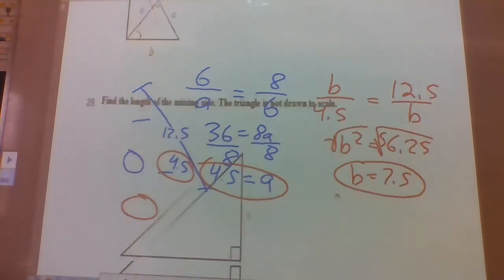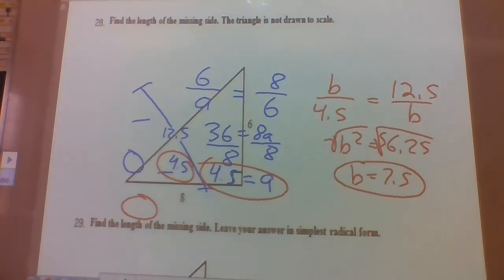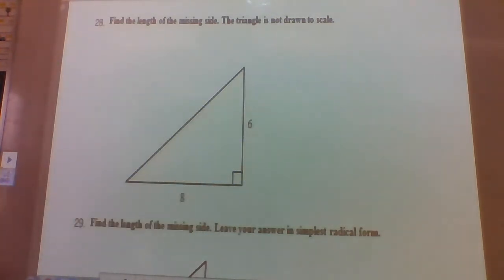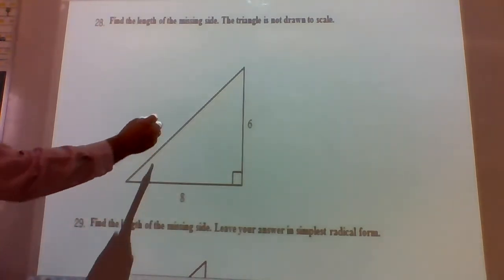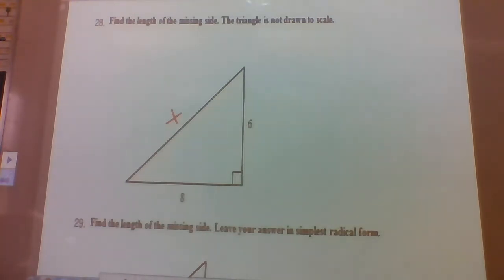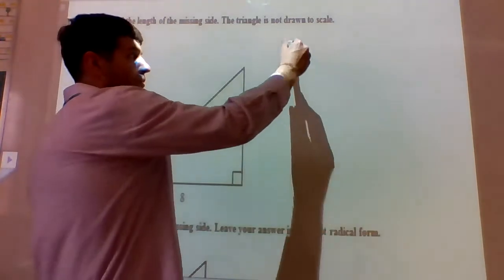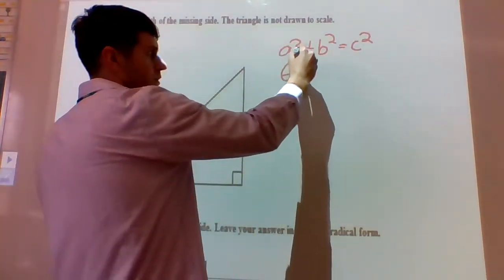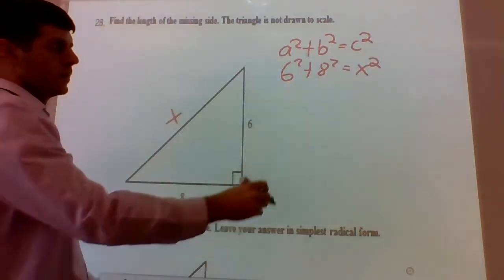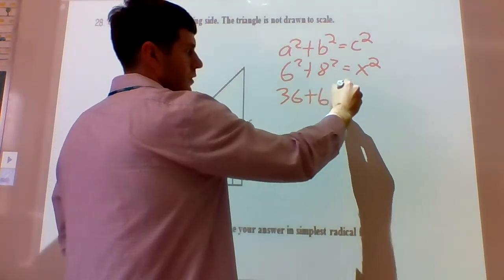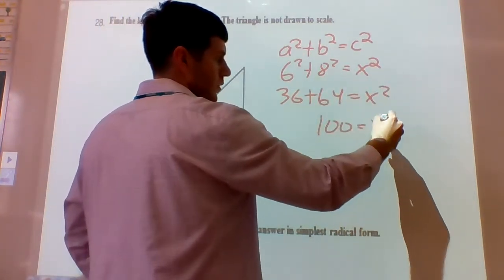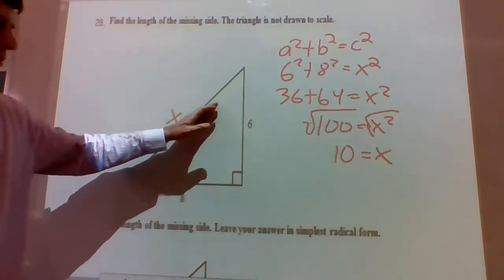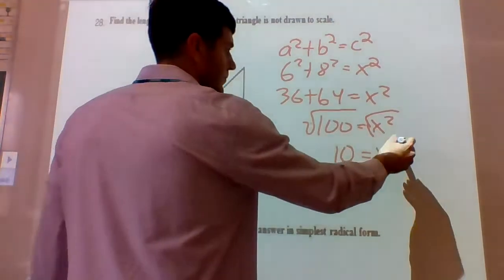Problem 28: find the lengths of the missing sides. We have a right triangle with two sides given and we need to find the third side using the Pythagorean theorem: a² + b² = c², or leg² + leg² = hypotenuse². The legs are 6 and 8, and the hypotenuse is X. So 6² + 8² = X², which gives 36 + 64 = X², so 100 = X². Taking the square root: X = 10 (positive only, since length can't be negative).